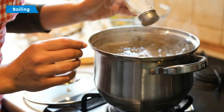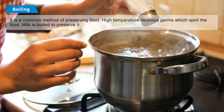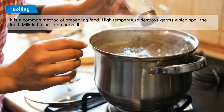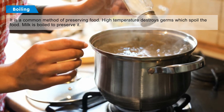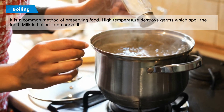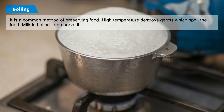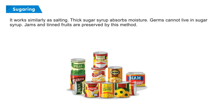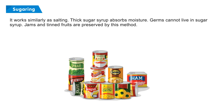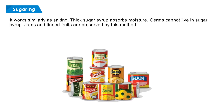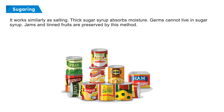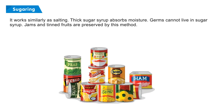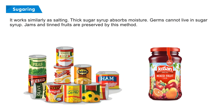Boiling: It is a common method of preserving food. High temperature destroys germs which spoil the food. Milk is boiled to preserve it. Sugaring: It works similarly to salting. Thick sugar syrup absorbs moisture, and germs cannot live in sugar syrup. Jams and tinned fruits are preserved by this method.